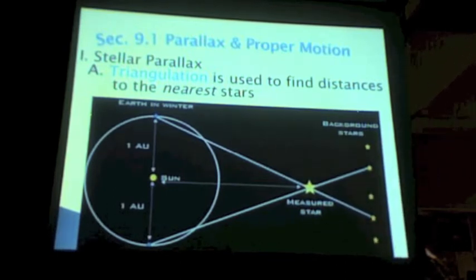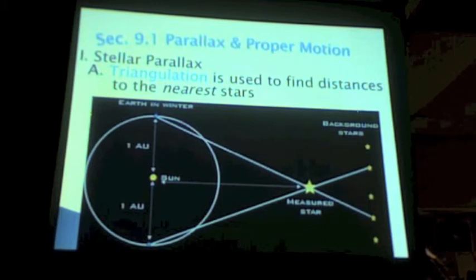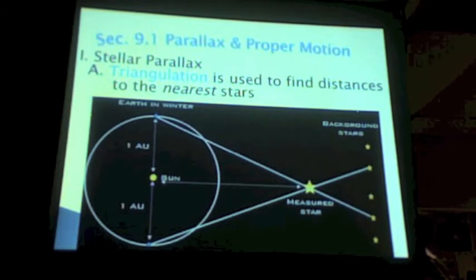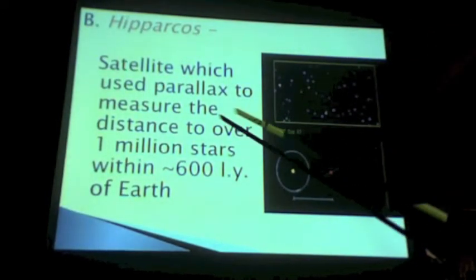We launched a satellite a few years ago called Hipparcos. Now, this is actually named after an ancient astronomer named Hipparchus. We'll get to him in the next section, I believe. But the Hipparcos satellite, what it does as it orbits the Earth, it is able to measure parallax much more precisely than ever before. And I'll give you the details here, hopefully, in just a second.